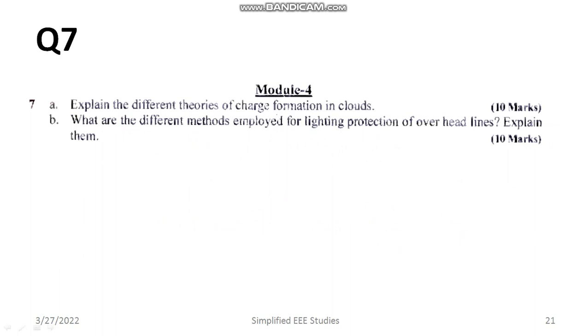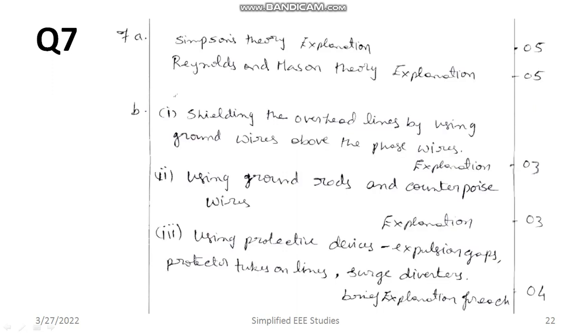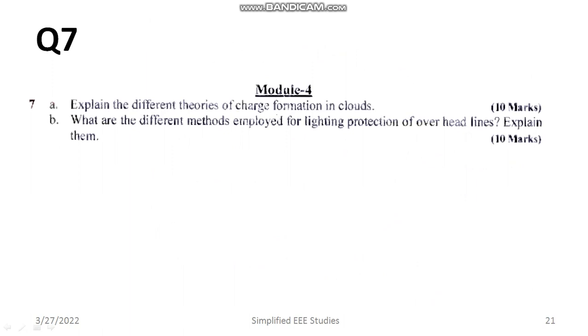Question number 7: Explain the different theories of charge formation in cloud. You have to mention the name of the theory. For example, Simpson theory, then Reynolds and Mason theory. That is yet to be done. I will be doing that soon. It is having the weightage of ten marks.